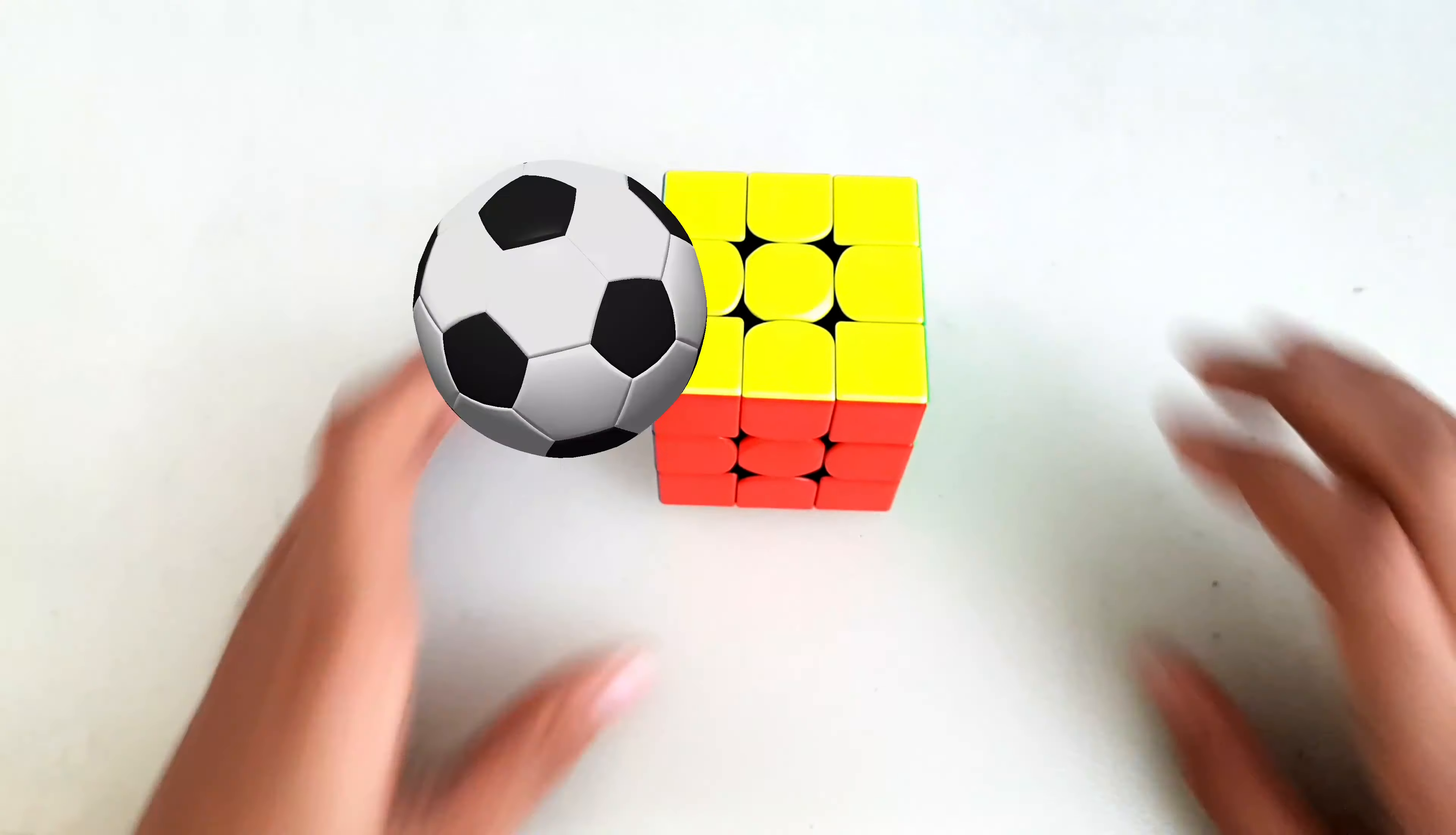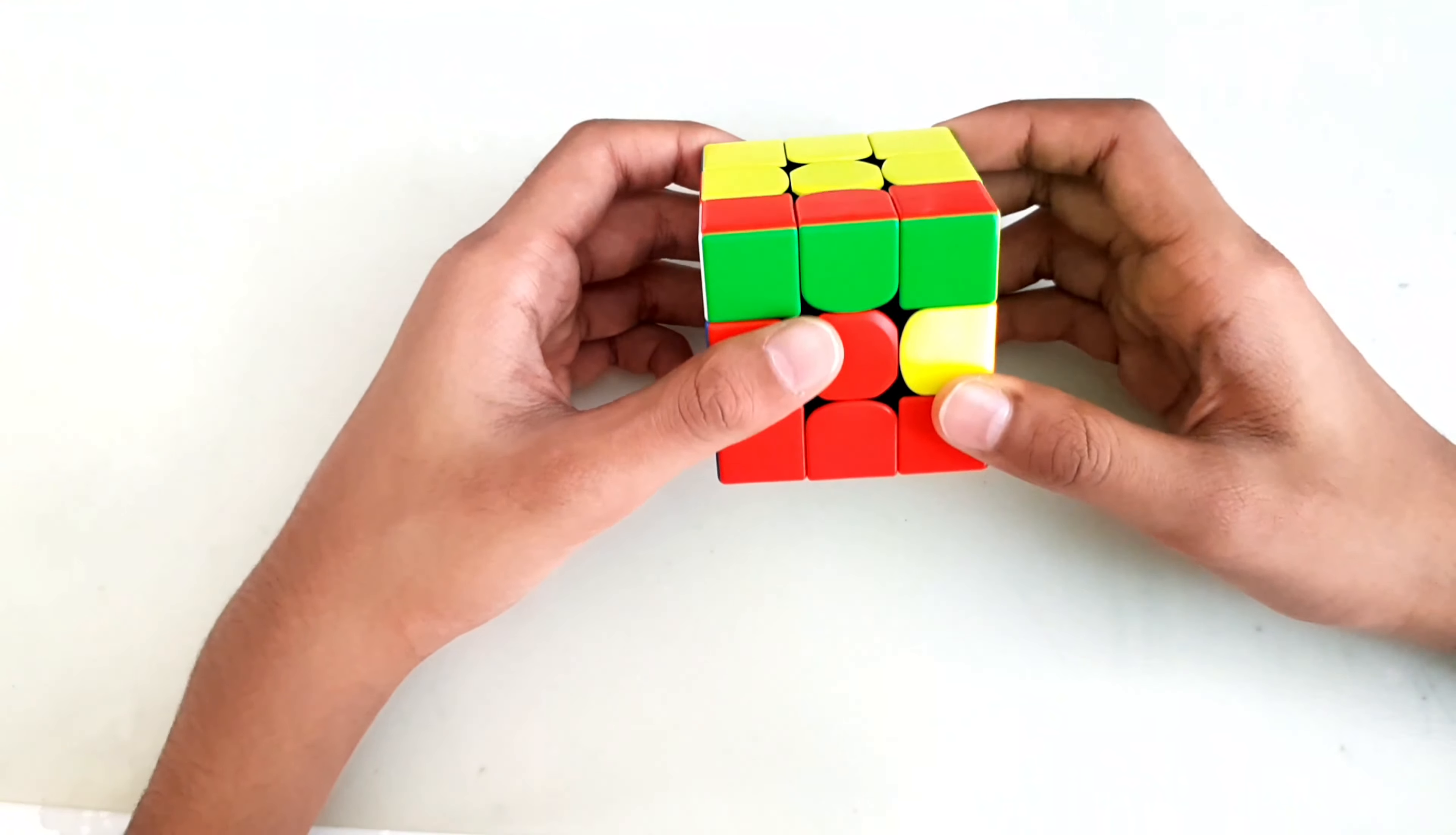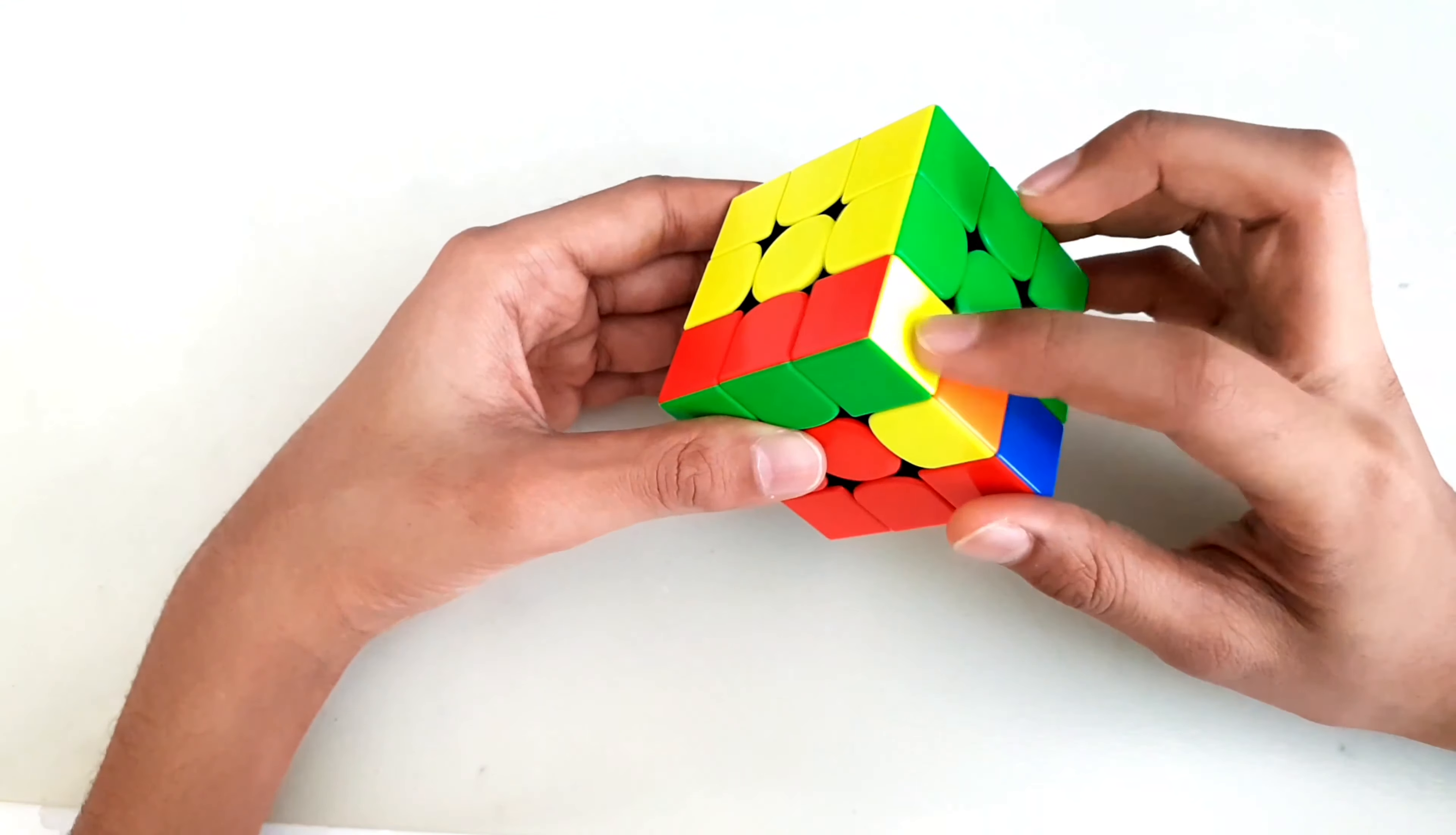Moving on to the third case. This case is the same as case two except the yellow corner is facing the right side. The algorithm goes like this...